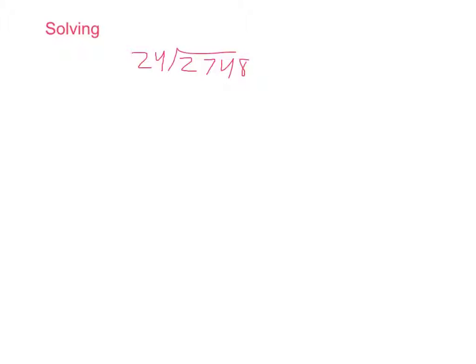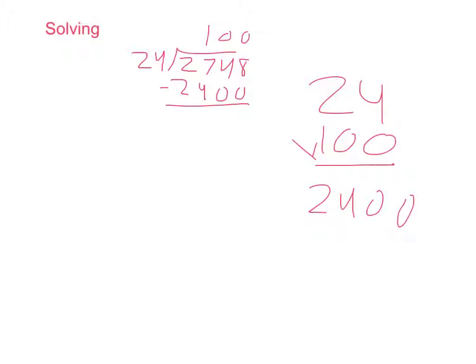24 goes into 2,748 about 100 times if you're making it an easy number to work with. So that would be 2,400. 2,400 is an easier number to work with since it ends in zeros. So you can put 2,400 below and put 100 on top because that's the number you multiplied 24 by.